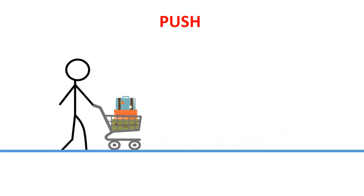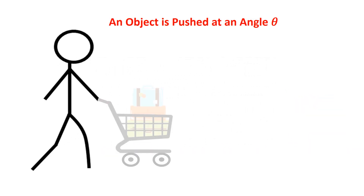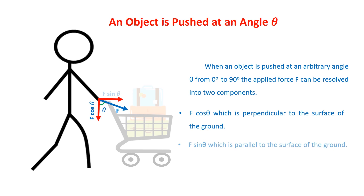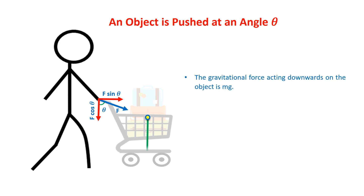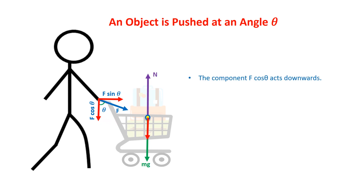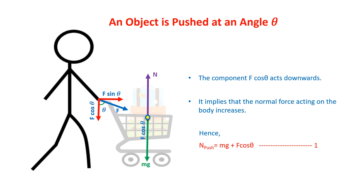Push. An object is pushed at an angle theta. When an object is pushed at an arbitrary angle theta from 0 to 90 degrees, the applied force F can be resolved into two components: F cos theta, which is perpendicular to the surface of the ground, and F sin theta, which is parallel to the surface of the ground. The gravitational force acting downwards on the object is Mg. The normal contact force N exerted by the surface of the ground acts upward. The component F cos theta acts downwards, which implies that the normal force acting on the body increases. Hence, N push equals Mg plus F cos theta.